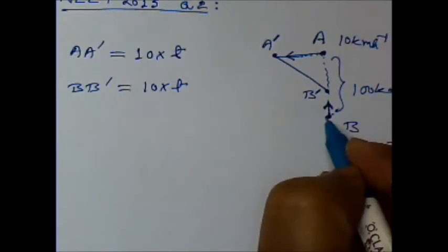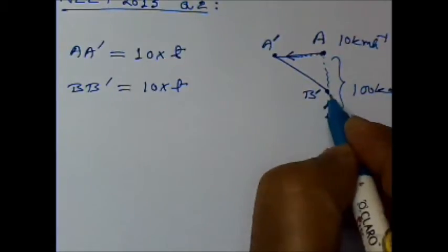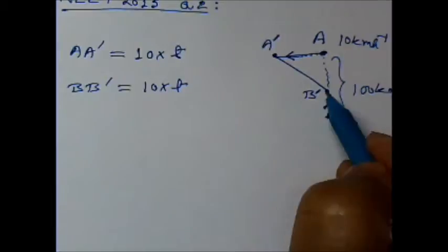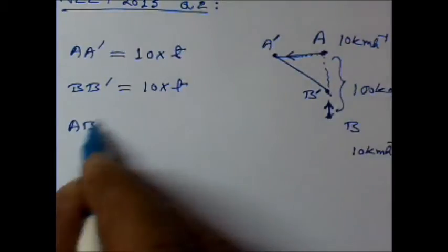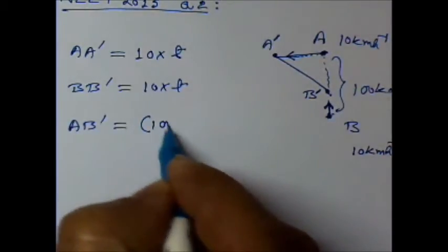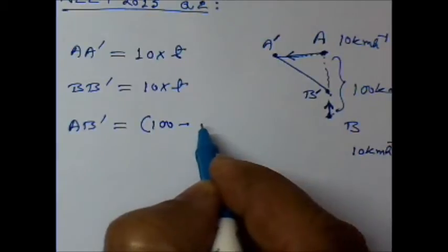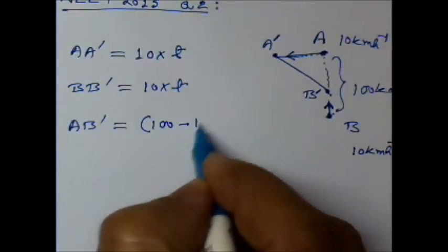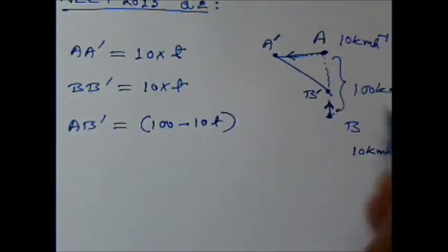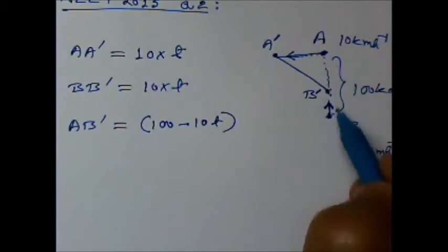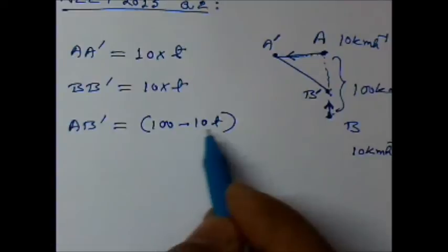So if BB dash is 10 into T, then AB dash will be 100 minus 10T. This distance initially was 100. Now this is 10T, so this will be 100 minus 10T.